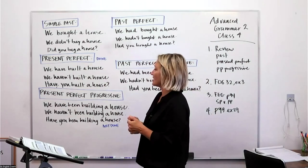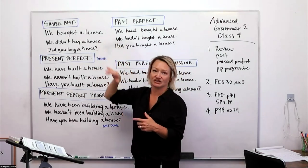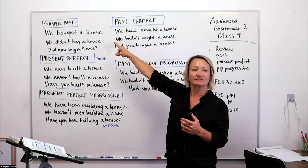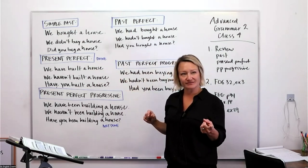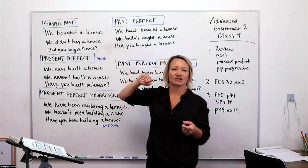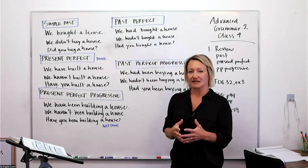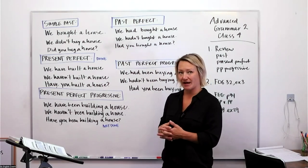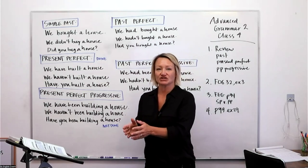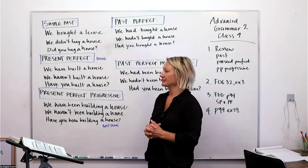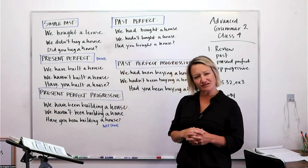With each tense I have an affirmative, a negative, and a question. Simple past: 'We bought a house.' 'We didn't buy a house.' 'Did you buy a house?' Present perfect — referencing something that started and ended in the past: 'We've built a house.' We started it, we finished it, it's done. 'We haven't built a house.' 'Have you built a house?'